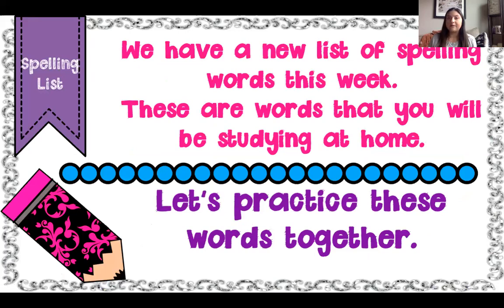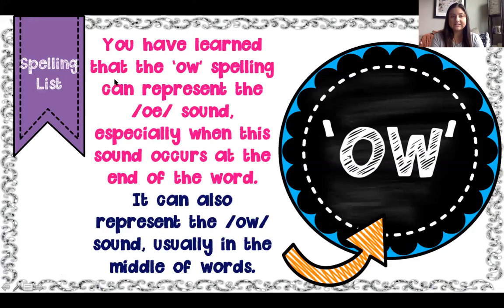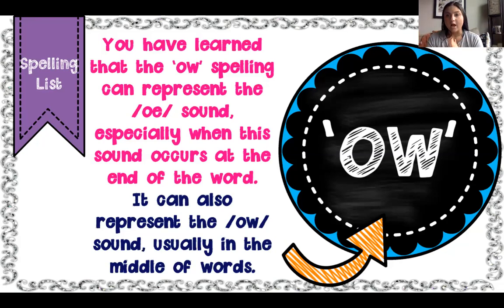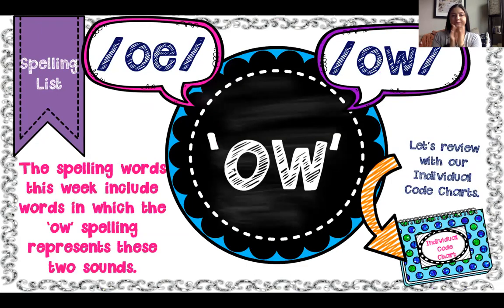We have a new list of spelling words to practice this week. All of our words this week have OW in them. This is tricky because OW sometimes says the long O sound and sometimes says OW — so the goal of our spelling list this week is to figure out which ones say O and which ones say OW. It's like a tug of war.